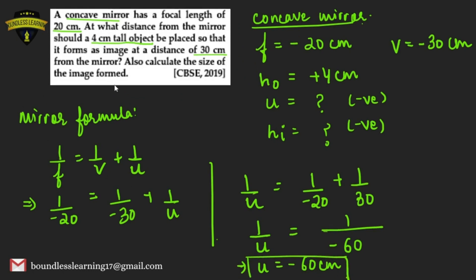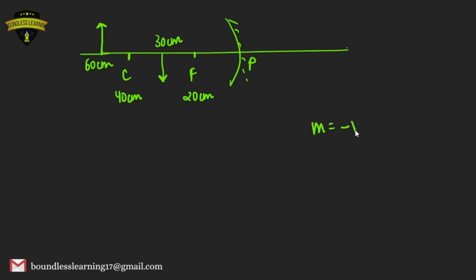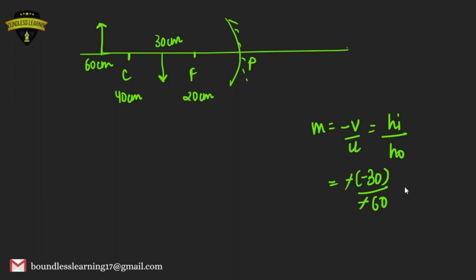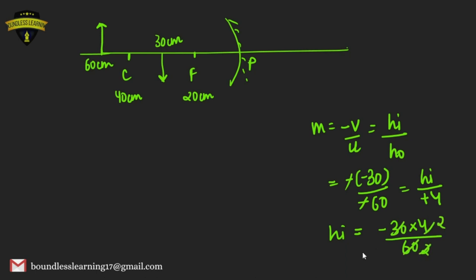Object distance from the mirror is 60 cm. Now to calculate the size of the image using the magnification formula: m = −v/u = height of image / height of object. So: height of image = (−v × height of object) / u = (−(−30) × 4) / (−60) = −2 cm. The image height is −2 cm, negative indicating it is below the principal axis as per Cartesian sign convention.